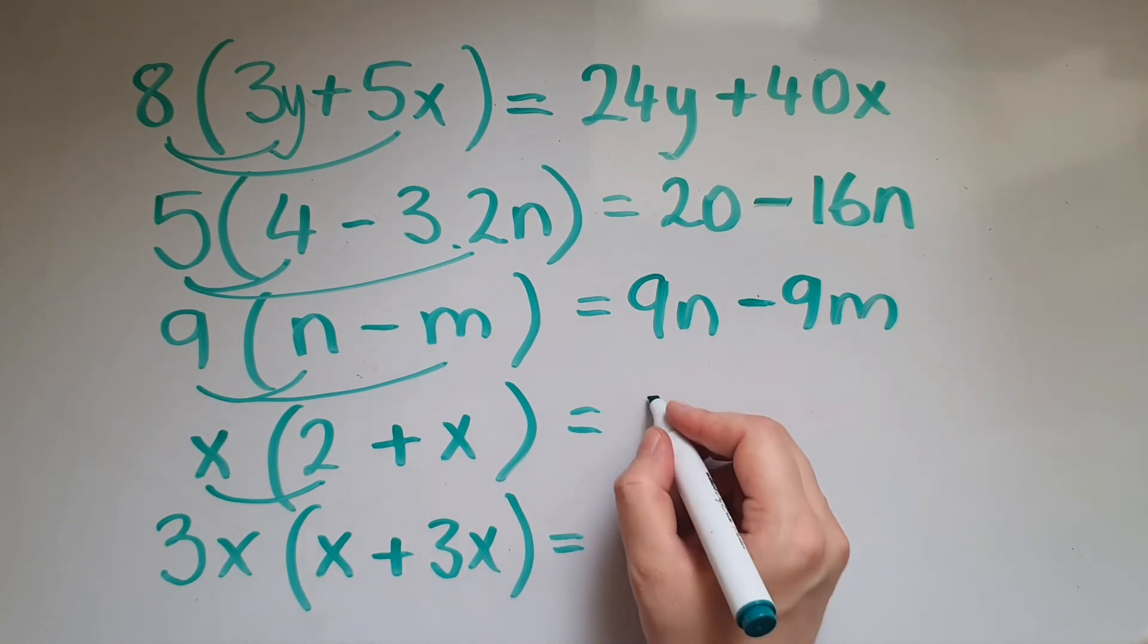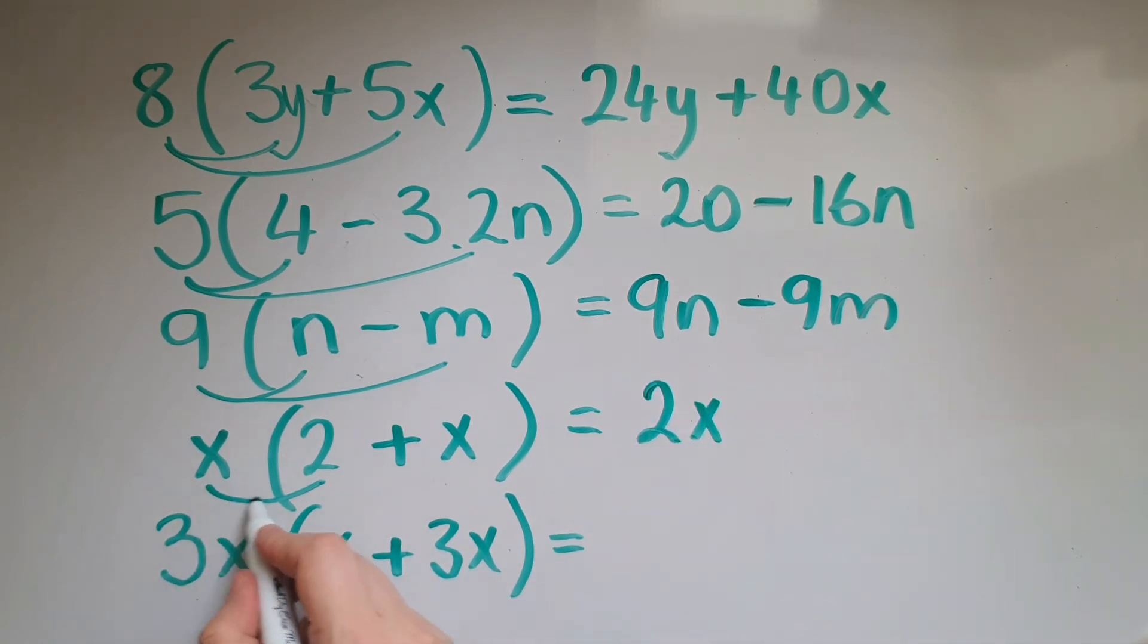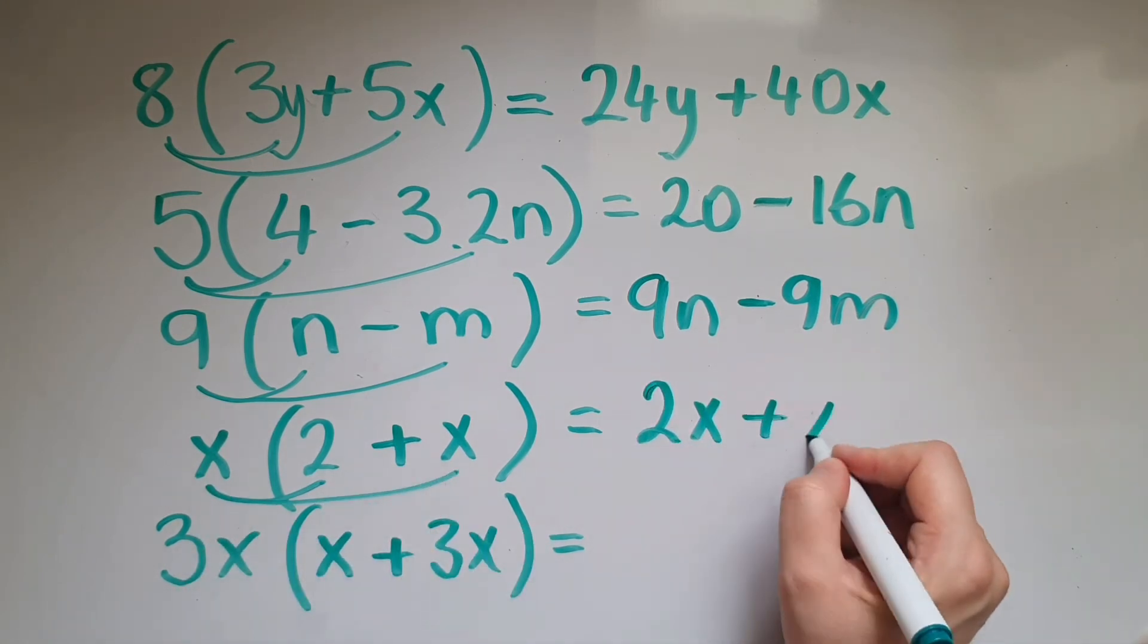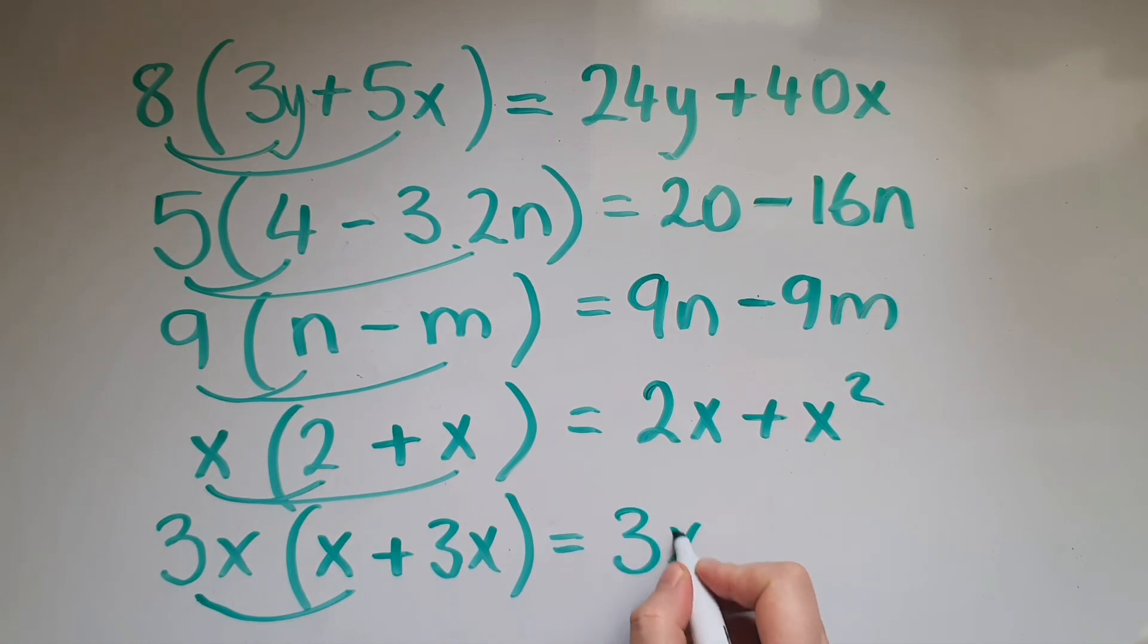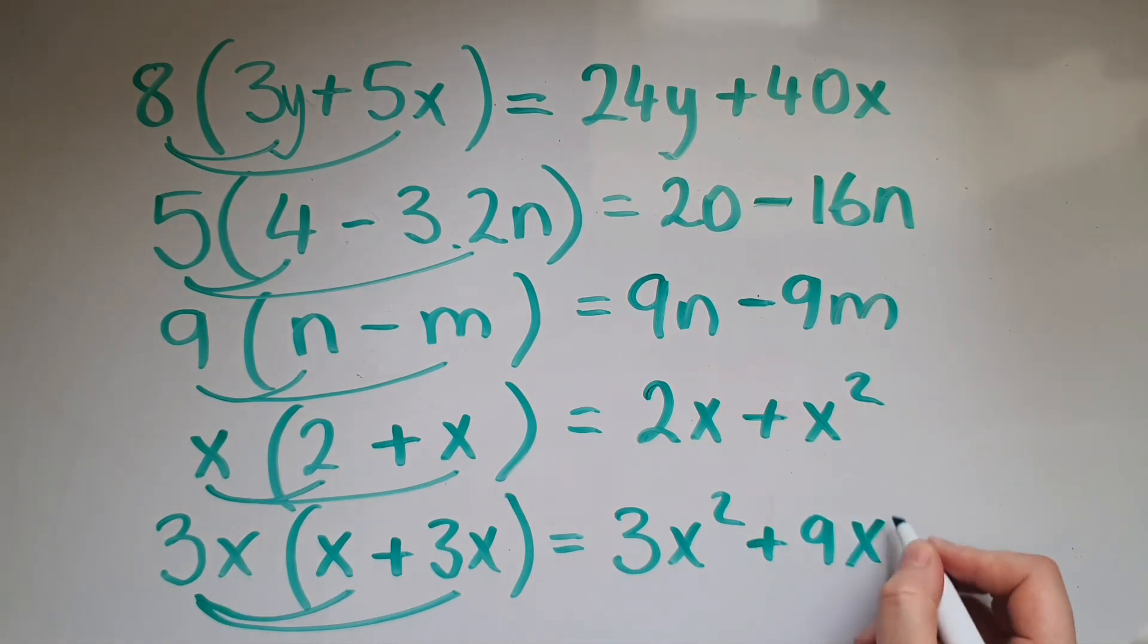x times 2 gives us 2x. x times x gives us x squared. 3x times x gives us 3x squared. 3x times 3x gives us, 3 times 3 is 9, so 9x squared. 3x squared plus 9x squared.